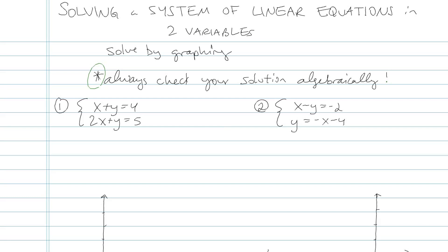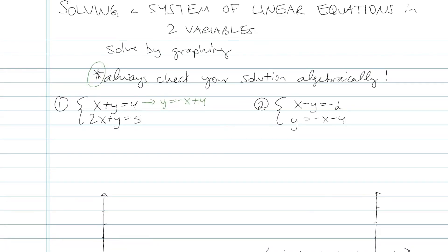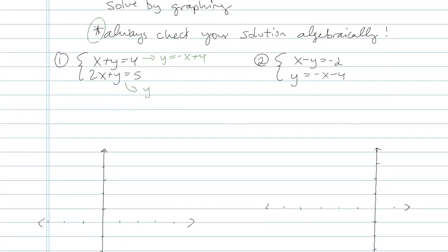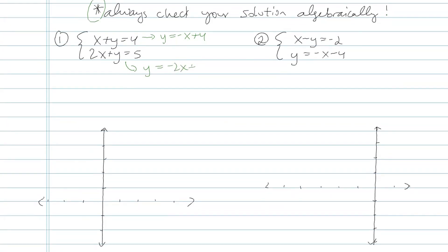Okay, let's look at the first one. x plus y equals 4, 2x plus y equals 5. Now, usually when graphing, it's easiest to have things in y equals mx plus b form. So for the first one, I'm going to subtract x from both sides. The second one, I'm going to subtract 2x from both sides, because now I can see the slopes and the y-intercepts.